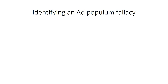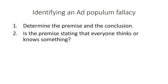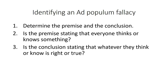How do we identify an ad populum fallacy? Number one, we determine the premise and the conclusion. Then we ask, is the premise stating that everyone thinks or knows something? Then we ask, is the conclusion stating that whatever they think or know is right or true? If this is the case, then it's a bandwagon fallacy, also known as ad populum. Because the argument is totally based on the fact that people think something, therefore it's right or true. It has no evidence — it's just making a claim about everyone, and we can't possibly know what everyone thinks or believes.